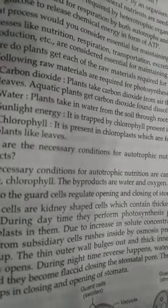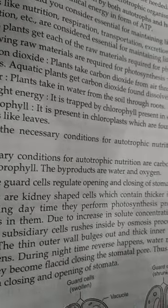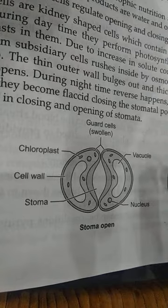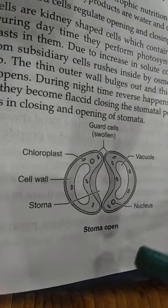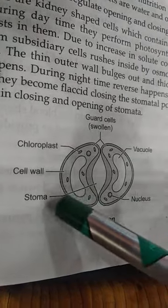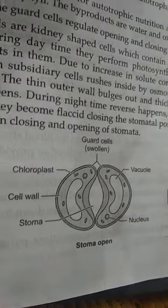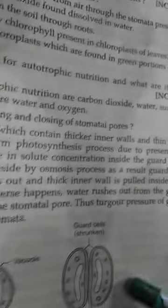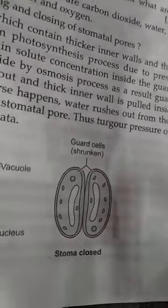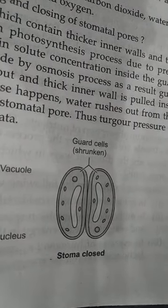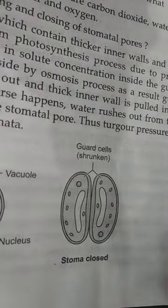This is the open stomata diagram. You can see the guard cells, vacuole, nucleus, stoma, cell wall, and chloroplast. And this is the closed stomata — the guard cells are shrunken.